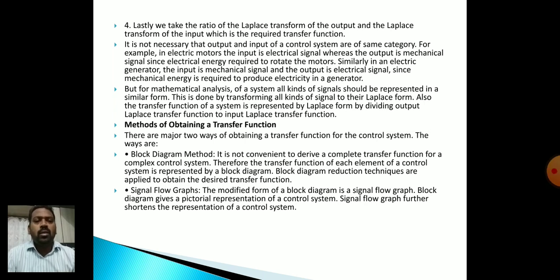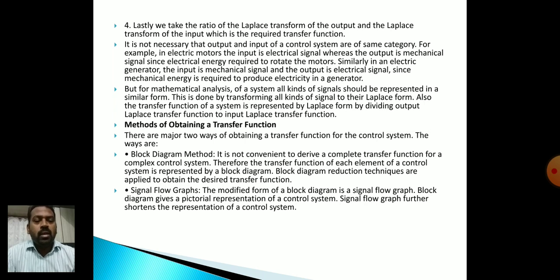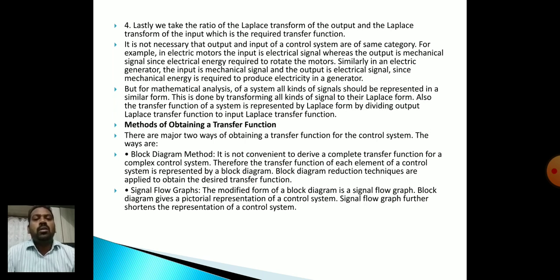There are two main methods to obtain the transfer function. The first is the block diagram method, which is convenient for deriving the complete transfer function of a complex control system. The transfer function of each element is represented by a block, and block diagram reduction techniques are applied to obtain the desired transfer function. The second method uses signal flow graphs, which are a modified form of the block diagram. While block diagrams give a pictorial representation, signal flow graphs further shorten the representation by concentrating on signal flow from one point to another.